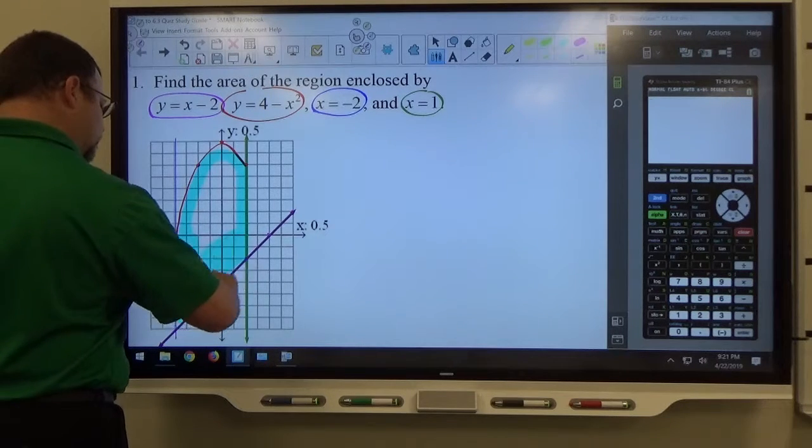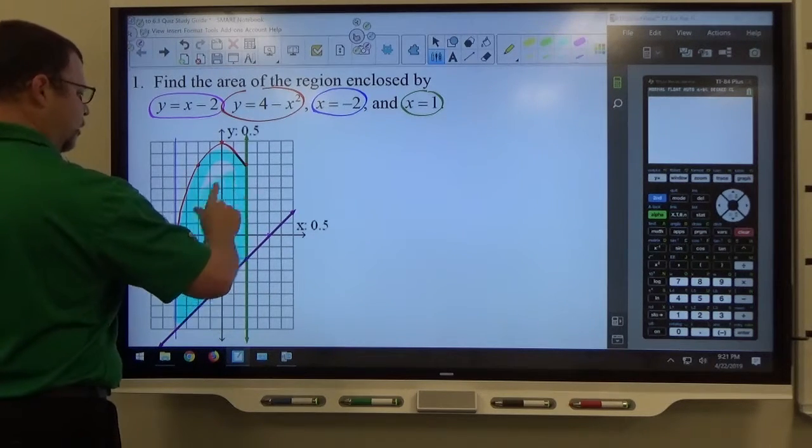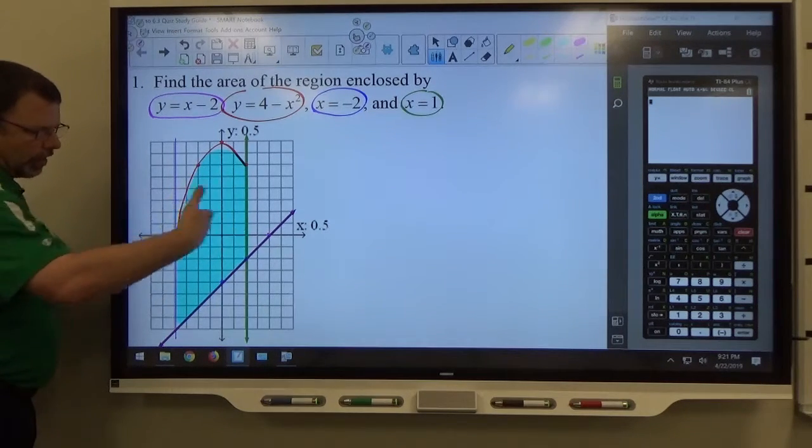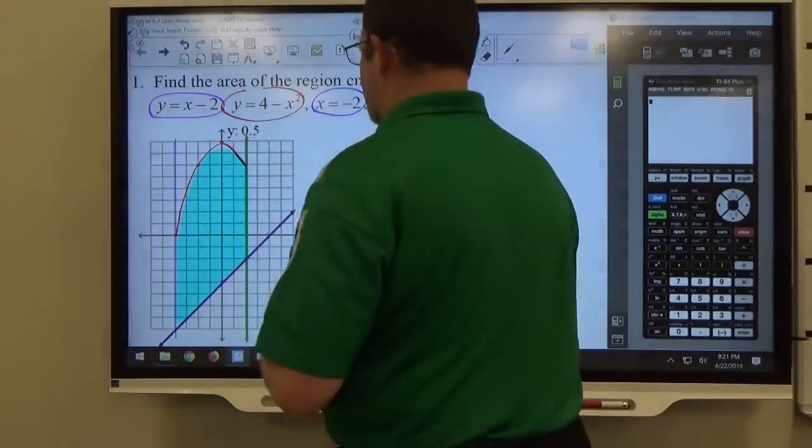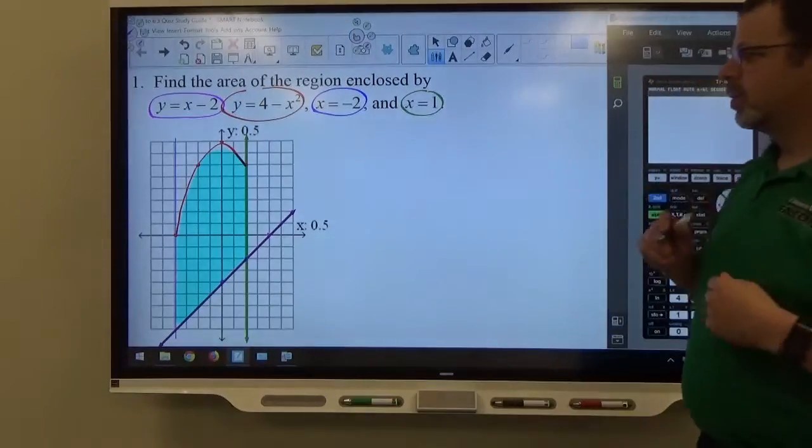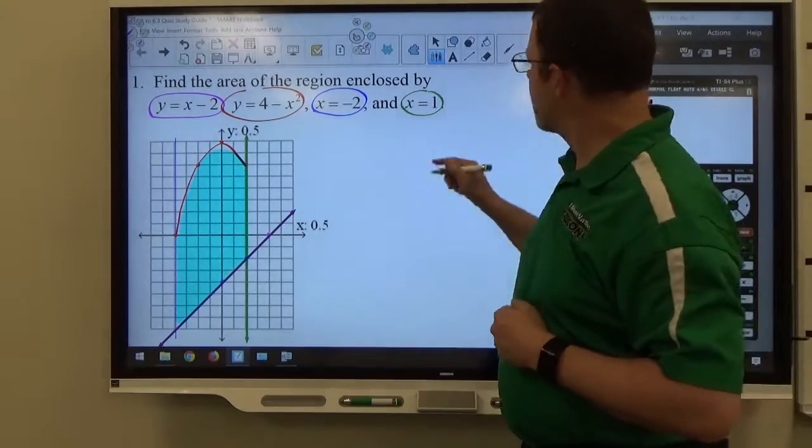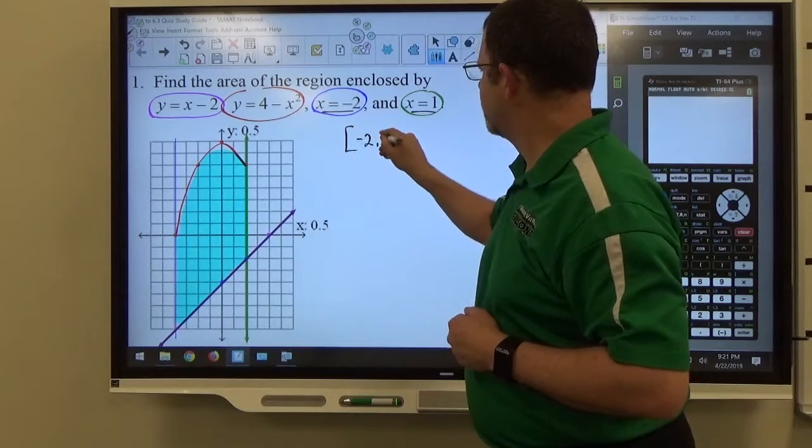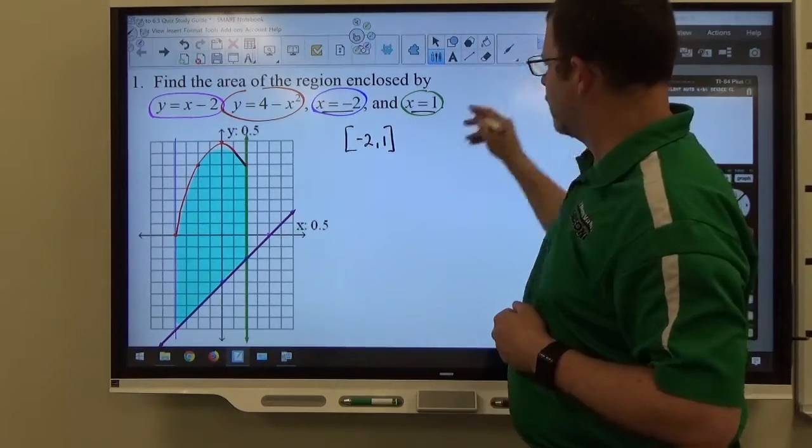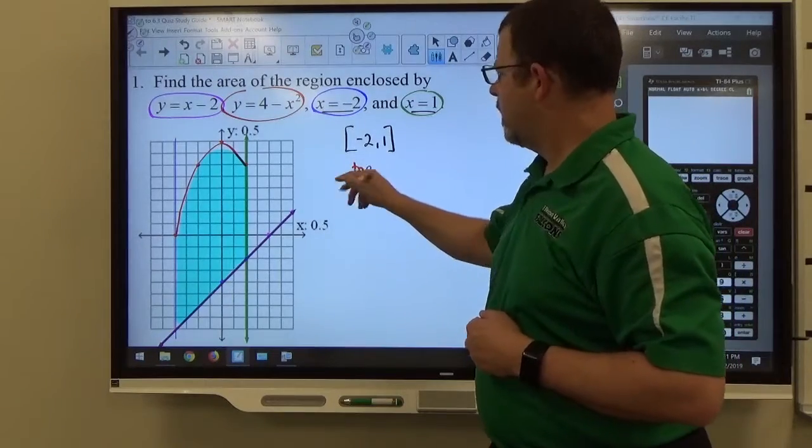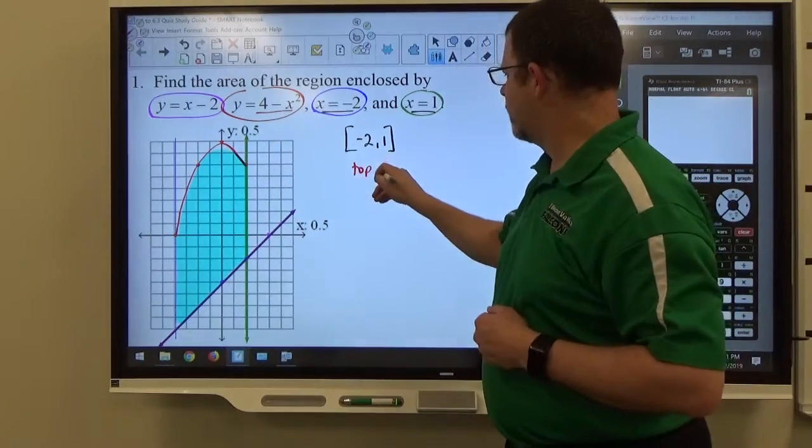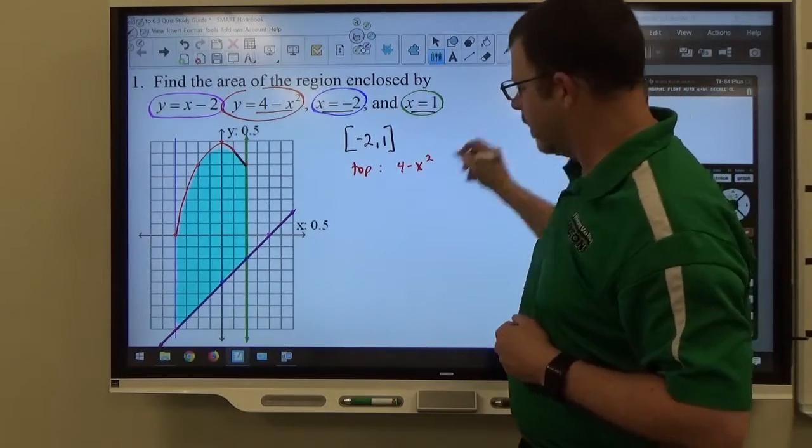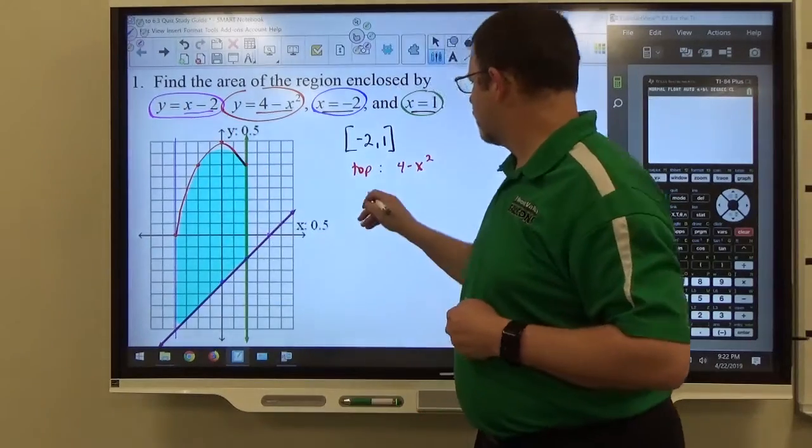So if you recall in this section, the main concern that we have, if we have one graph above the other graph, and we have a horizontal interval to look at, is what's the top, what's the bottom, and what are the constraints of the interval that we're going to deal with. So my interval seems to be from negative 2 to 1. My top function is the parabola, which is 4 minus x squared. And my bottom function seems to be the line, which is x minus 2.